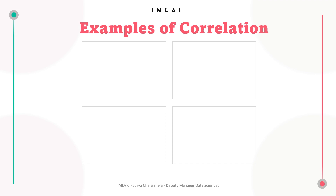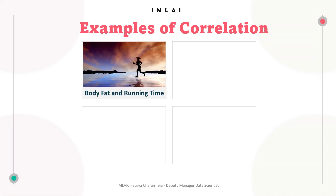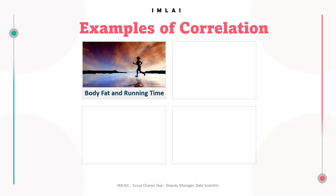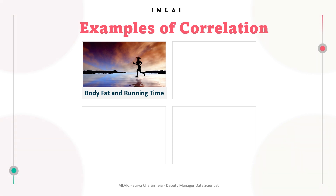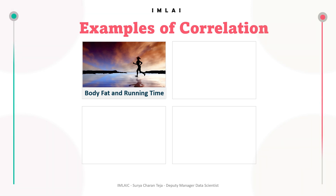The first example is body fat and running time. An individual's body fat tends to be lower the more time they spend jogging. In other words, there is a negative correlation between body fat and running time — body fat decreases as running time increases. These two variables are inversely proportional, which leads to a negative correlation coefficient.